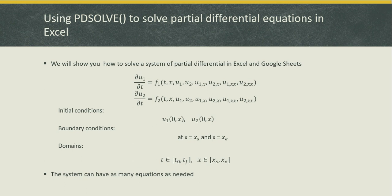The system must be presented in the shown format. The system can have as many equations as needed. Each equation must be first order in time, but it can be nonlinear in the variables and up to second order in space. Initial conditions are required for the variables as well as left and right boundary conditions for each equation.